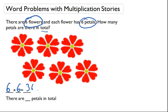And if I were to count all of these petals, I'm going to find that there are 36 petals. So that is how you use a multiplication story to solve a word problem.